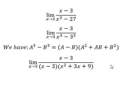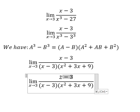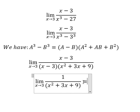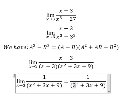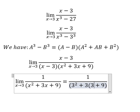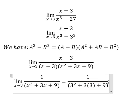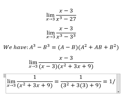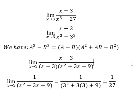Now we can simplify x minus 3. And then I will put 3 here and here. So we have 1 over 27. This is the end, thank you for watching.